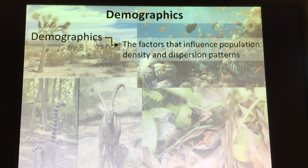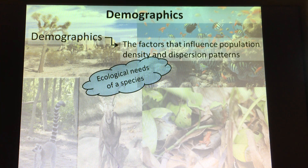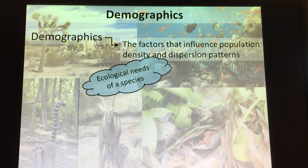Density might be influenced by things like competition, food, resources, and space. Dispersion patterns might involve things like: is it for mating? Is it random how they land? Is it for hunting? So the things that influence population density and dispersion patterns include the ecological needs of a species — their food requirements, space requirements, sunlight, water, nutrients, etc.